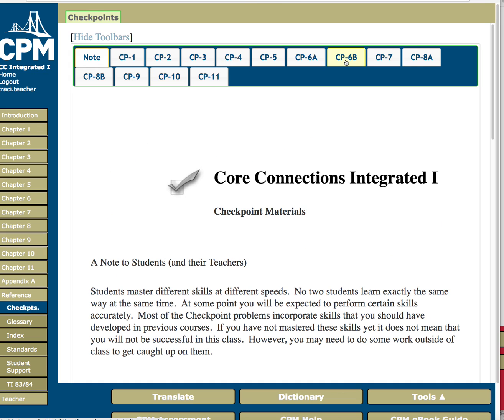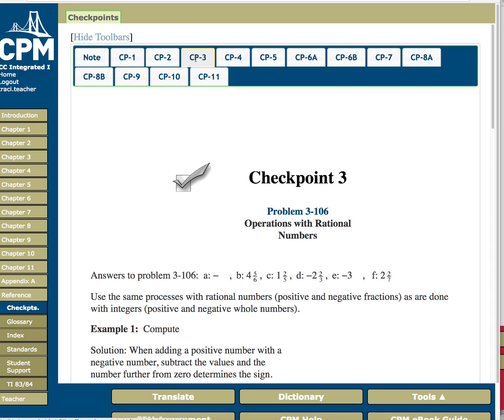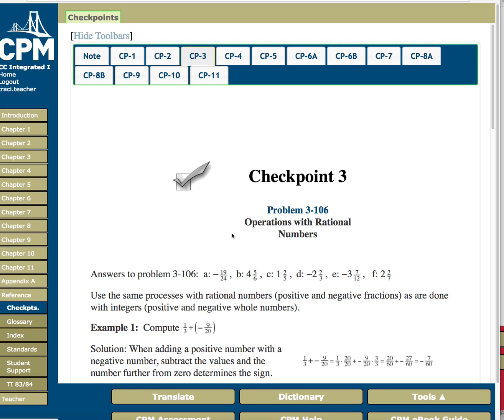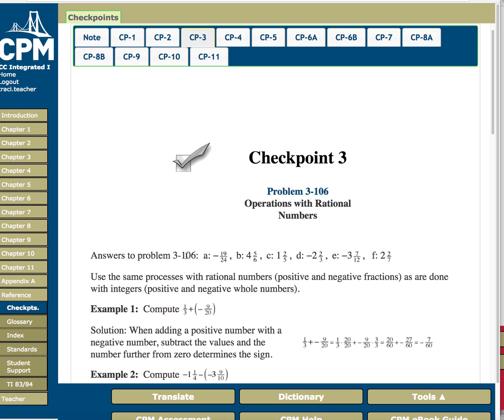And these are review problems. So remember, we're on chapter 3. So the checkpoint for chapter 3 is operations with rational numbers. Now this is something you've probably learned before. Maybe you hadn't quite mastered it. And this is the place to now do it. Because from now on, it will be expected that you will know how to do this very fluently. And so there will be a problem in your chapter 3, problem 106. And that is your checkpoint problem. So here are your answers to the checkpoint problem.